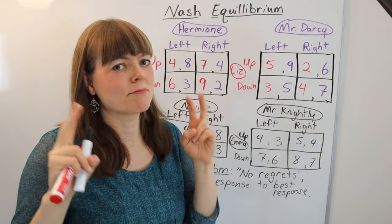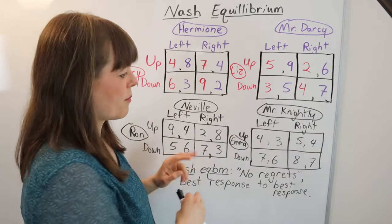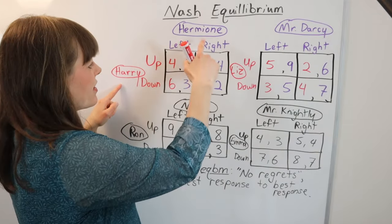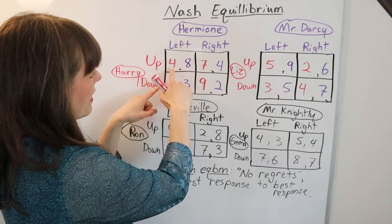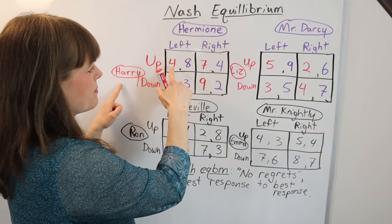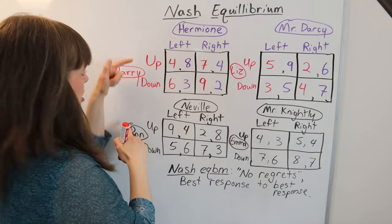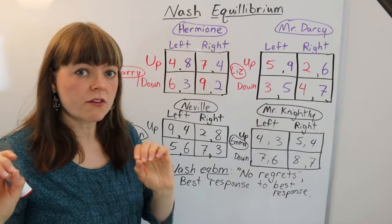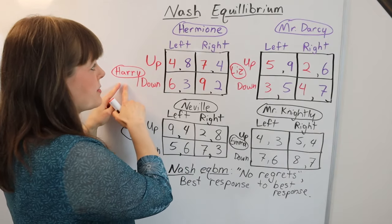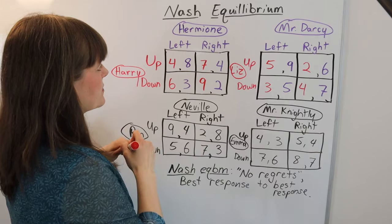Now that doesn't necessarily mean best choice or best outcome, but let's actually solve these problems so you can see how it's done. We've got a game with Harry and Hermione, and Harry's payoffs in this case are red — he's player one, so his payoffs are always the first payoffs listed. His strategies are up and down. To solve these, we first start by thinking from Harry's perspective, meaning we only care about the red outcomes.